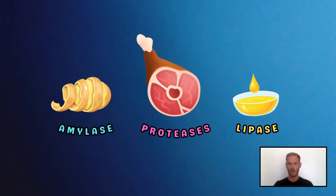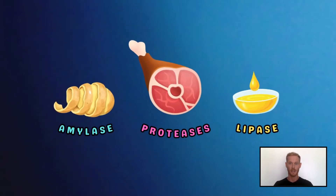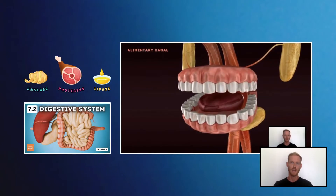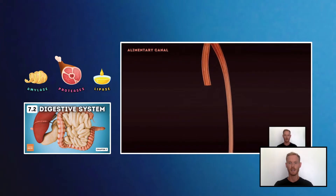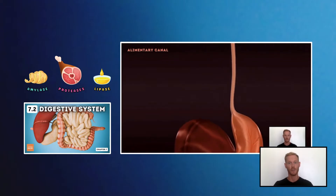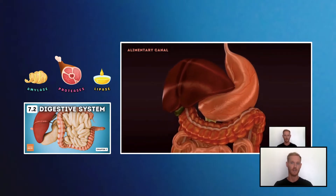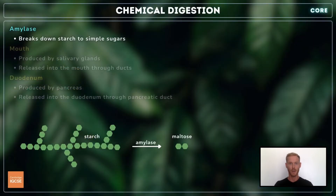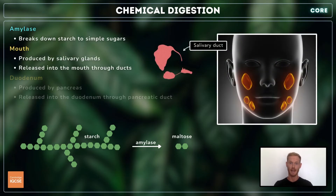You need to describe the functions of three types of enzymes in chemical digestion: amylase, proteases, and lipase. Amylase breaks down the complex carbohydrate starch into simple reducing sugars. It's produced by salivary glands and released into the mouth through ducts. Chewing breaks down food and mixes it with saliva, allowing the amylase to get to work.